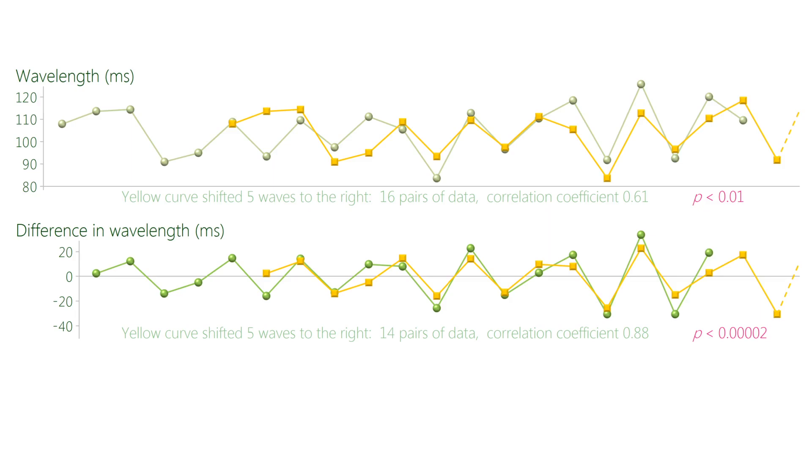The interval for the alpha wave pattern reveals the number of highly active columns. By moving the yellow curve five steps to the right, you can check that you got the correct interval. The bottom diagram shows the difference in wavelength, which is the difference between a wavelength and the average of the wavelengths one step before and one step after. This way of displaying data reduces the effect of slow fluctuations in wavelength. In this example, the probability that the alpha wave pattern occurred by pure chance is very low.